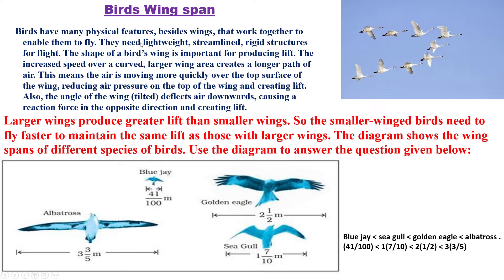Birds have many physical features besides wings that work together to enable them to fly. They need lightweight, streamlined, rigid structures for flight. The shape of the bird's wing is important for producing lift — increased speed over a curved, larger wing area creates a longer path for air, meaning air moves more quickly over the top surface of the wing, reducing air pressure on top and creating lift. Also, the angle of wings tilted deflects air downwards, causing a reaction force in the opposite direction and creating lift.